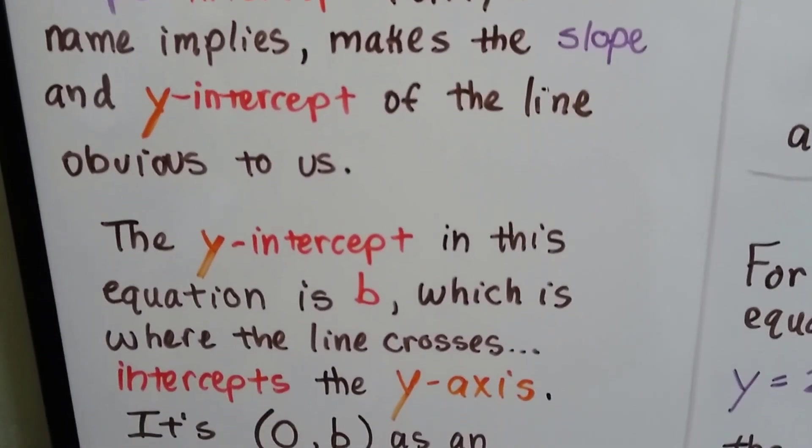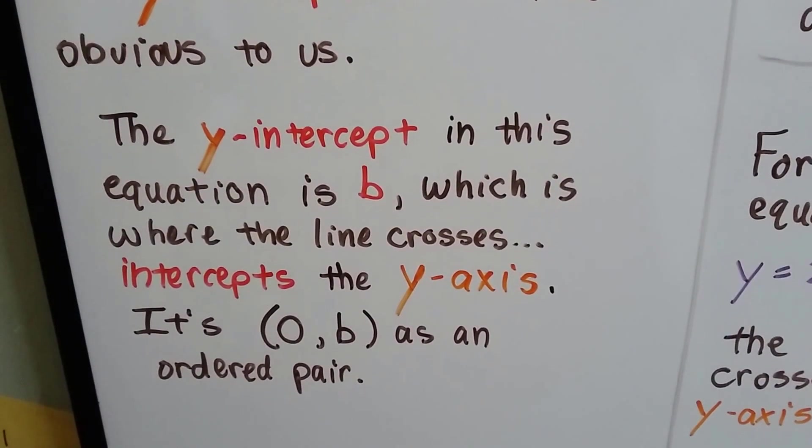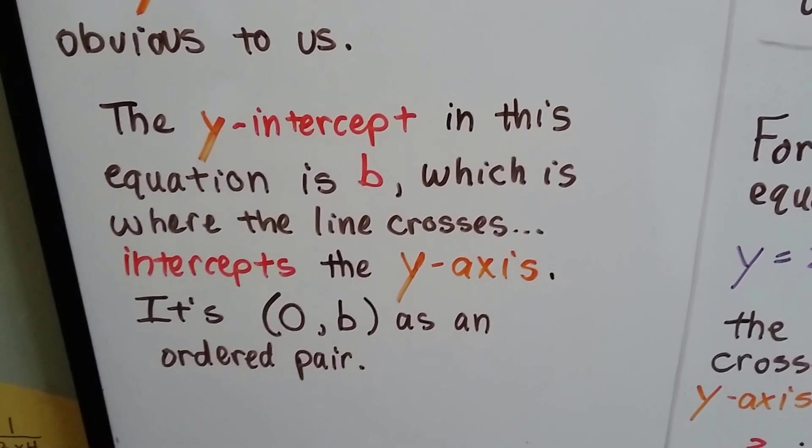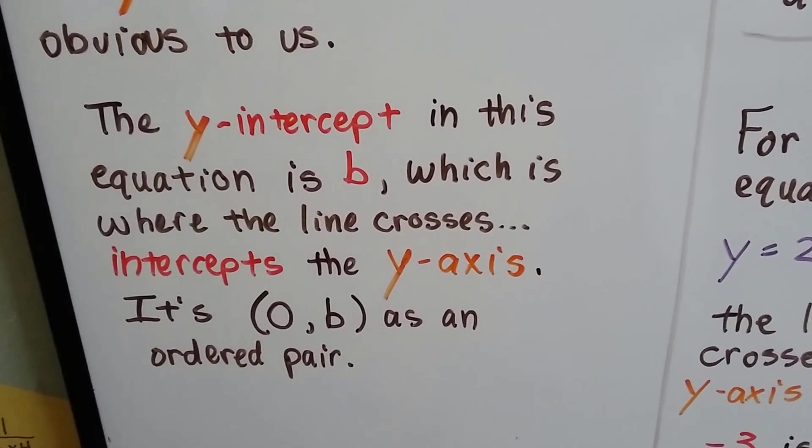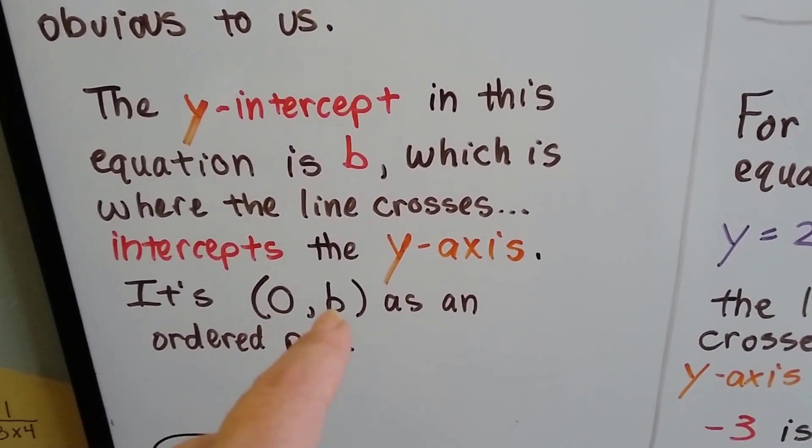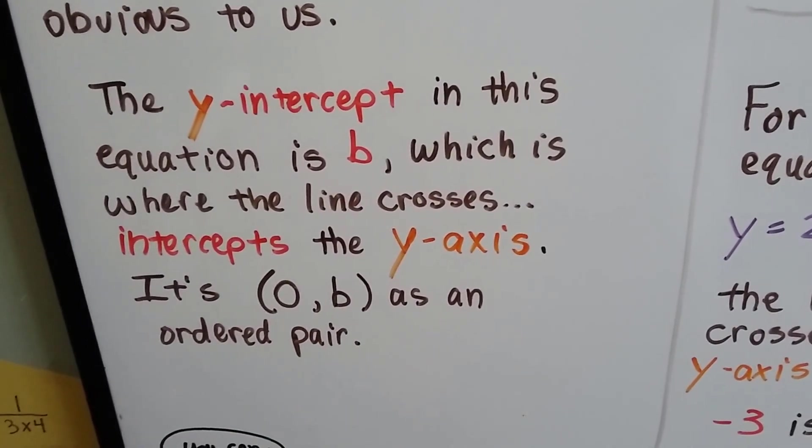The y-intercept in this equation is b, which is where the line crosses, it intercepts the y-axis. So if x is 0, then the y value is going to be b, whatever it stands for, as an ordered pair.